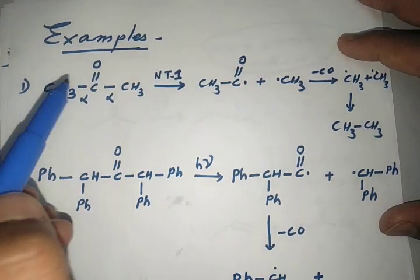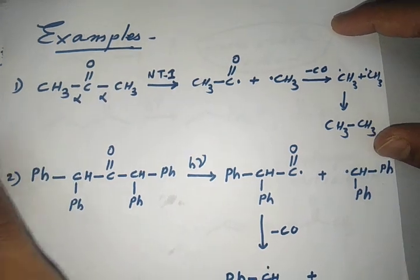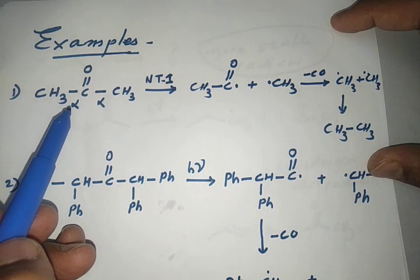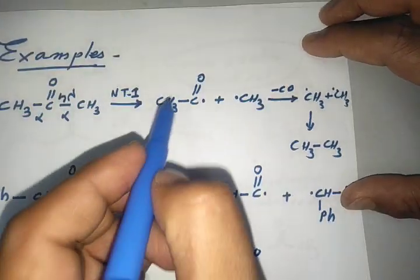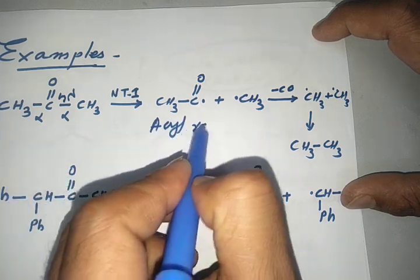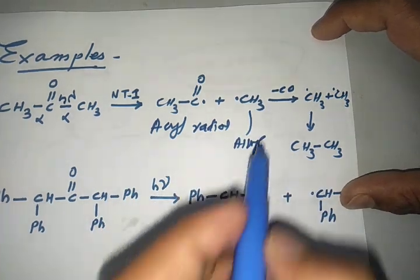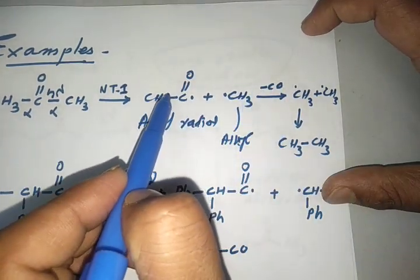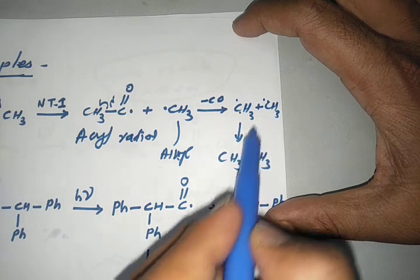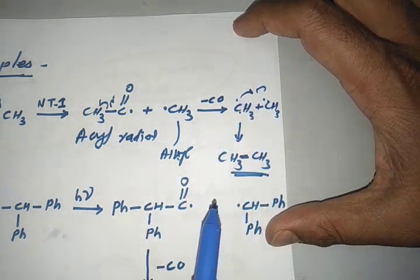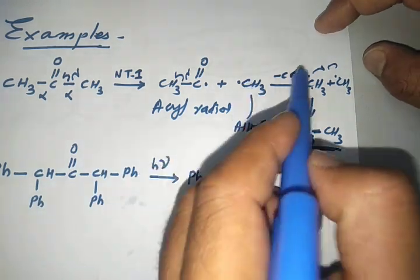Let us take a simple example: acetone. There is only the alpha carbon here, so only alpha hydrogen abstraction will take place. The alpha bond cleavage forms an acyl radical and an alkyl radical. The alkyl radical then undergoes decarbonylation — further fragmentation — forming one more radical. These radicals combine to form a carbon-carbon bond. Up to this point is the primary process; decarbonylation is the secondary process.